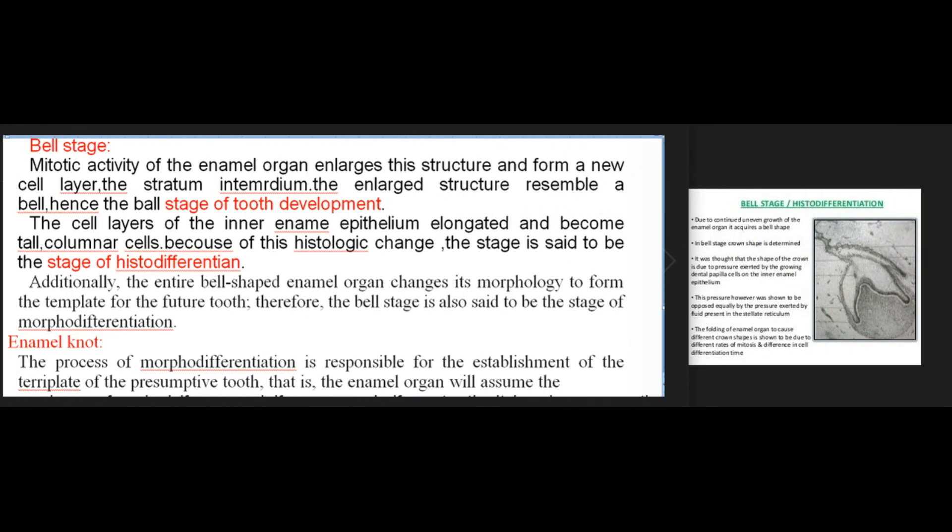In the bell stage, mitotic activity of the enamel organ enlarges the structure and forms a new cell layer, the stratum intermedium. The enlarged structure resembles a bell, hence the bell stage of tooth development. The cells of the inner enamel epithelium elongate and become tall columnar cells; because of this histologic change the stage is said to be the stage of histodifferentiation. Additionally, the entire bell-shaped enamel organ changes its morphology to form the template for the future tooth, so the bell stage is also said to be the stage of morphodifferentiation.